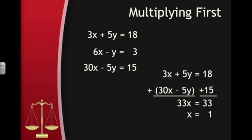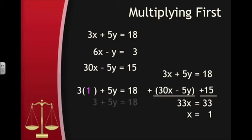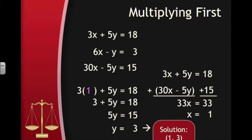Now that we know that, we need to substitute it into one of the equations to find the value of y. We can substitute it into either equation, so I'll use the first one to get 3 times 1 plus 5y equals 18. This gives us 3 plus 5y equals 18, so we can subtract 3 from both sides to get 5y equals 15, then divide both sides by 5 to get y equals 3. Now we have our final answer.